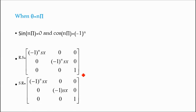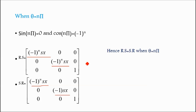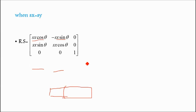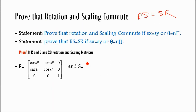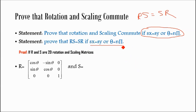SR also becomes: (-1)^n · sx, 0, 0; 0, (-1)^n · sy, 0; 0, 0, 1. Comparing term by term, both matrices are equal when theta equals n-pi. Hence RS equals SR when theta equals n-pi. In conclusion, rotation and scaling commute if sx equals sy or theta equals n-pi; otherwise they are not commutative.